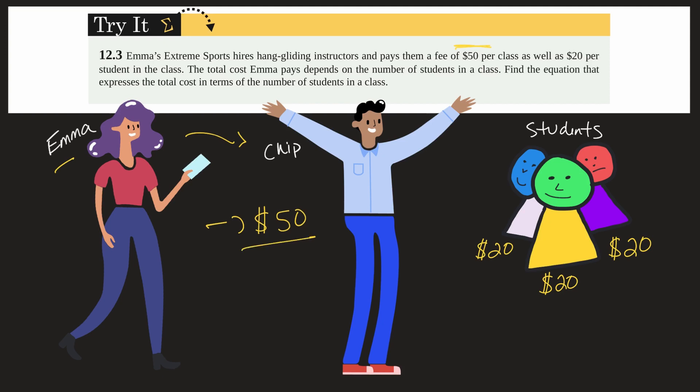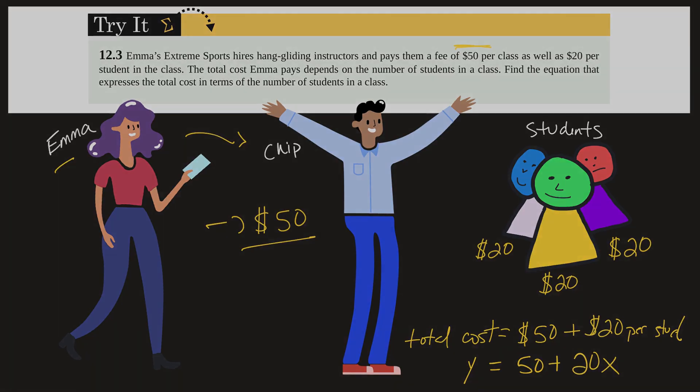So in this case her total cost will equal the $50 she gives him up front plus $20 per student. So we can write that as total cost is y equals $50 plus $20 per student. So 20x. So that equation represents her total costs as the $50 up front plus $20 per student.